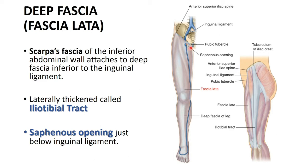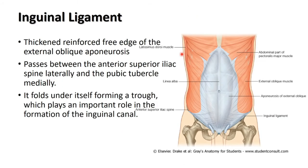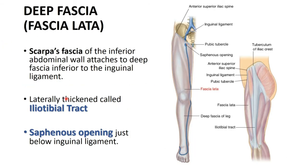The more important features of fascia lata are two things: the iliotibial tract and the saphenous opening. Before discussing these, we should discuss the inguinal ligament, as it will come up repeatedly.